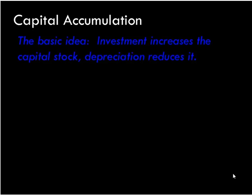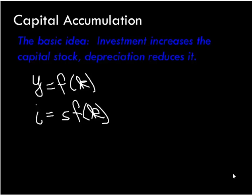To see that: little y equals little f of little k, so little y is a function of little k. Little i equals s times f of little k, so little i is a function of little k. Little c equals 1 minus s times f of little k, so it's a function of little k. Every endogenous variable — not exogenous variables like s (the savings rate) or delta (the depreciation rate) — can be solved as a function of capital per worker.